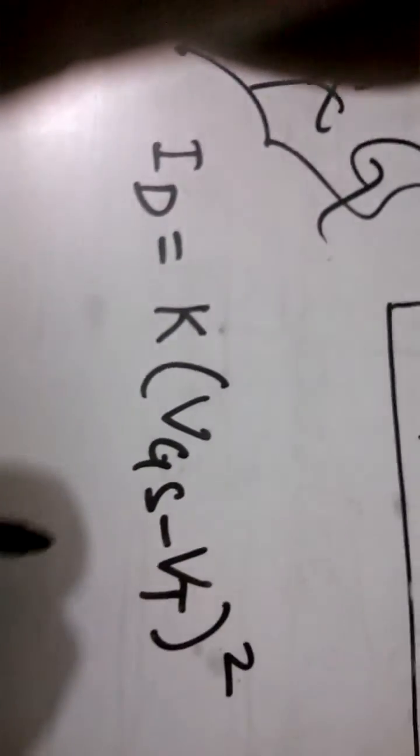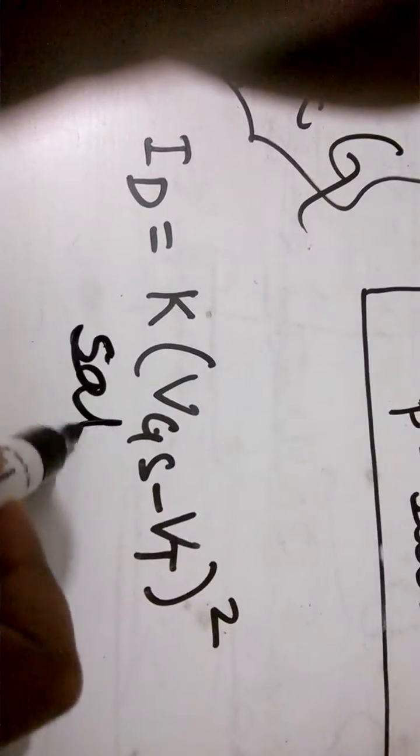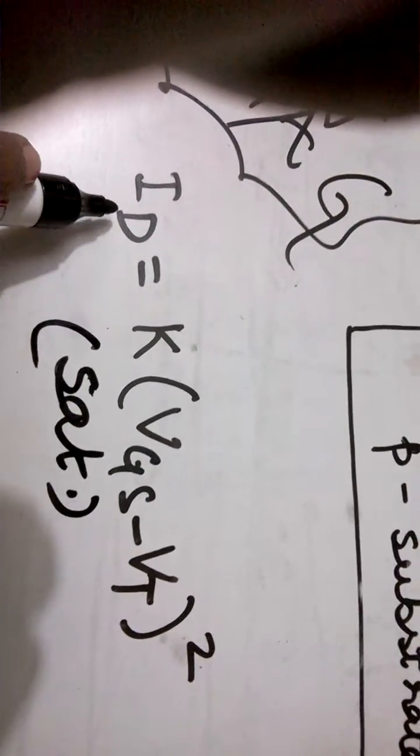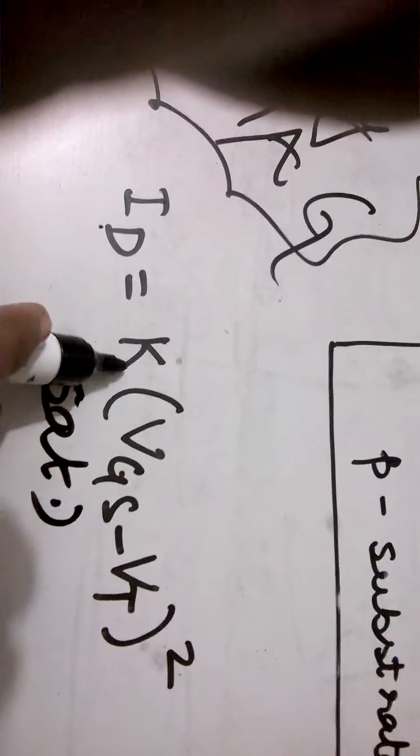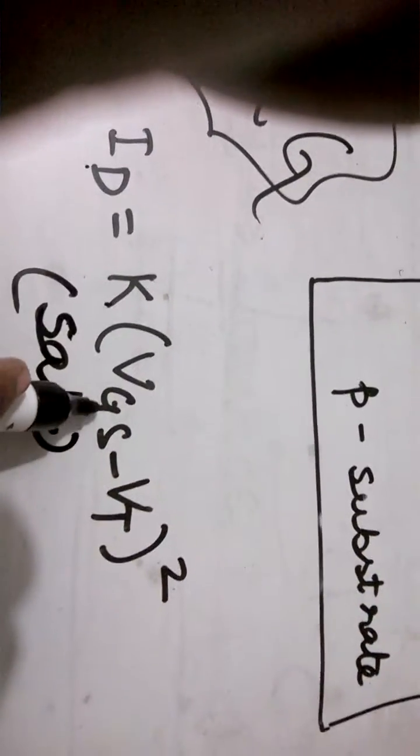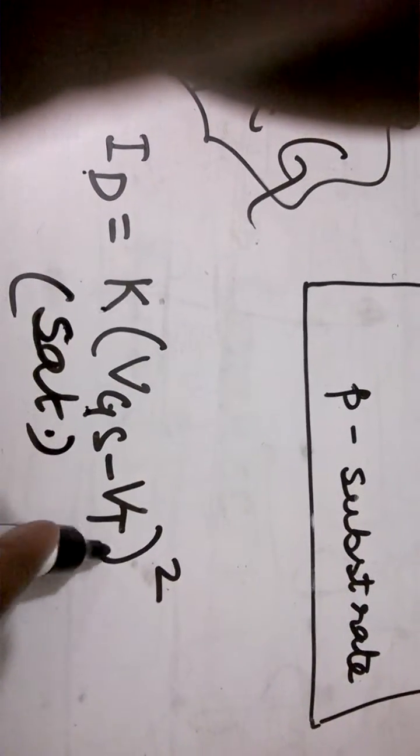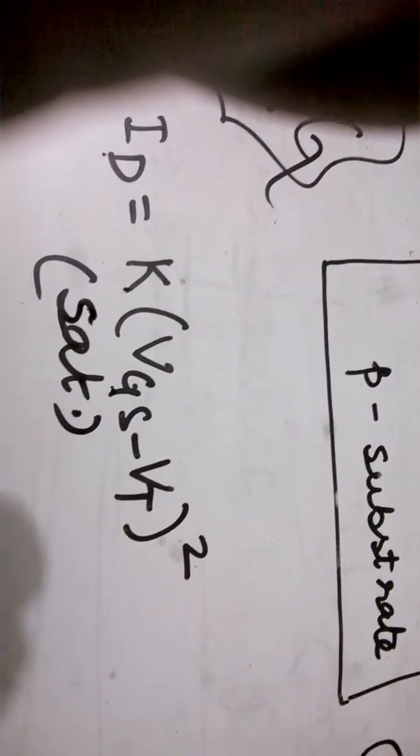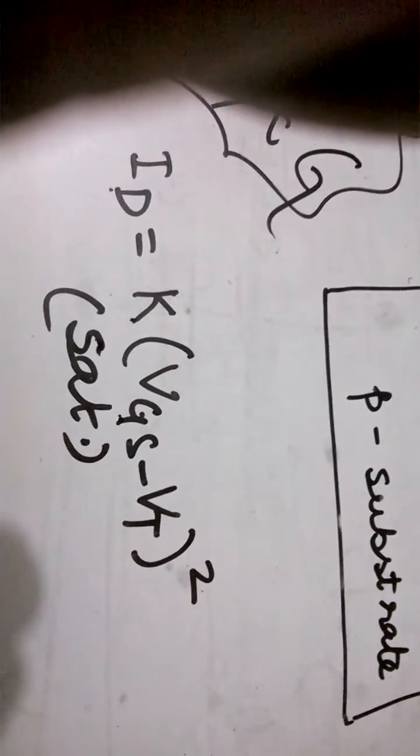Let's see the drain current equation. This is the drain current equation in the saturation region. This equation is valid only for the saturation region of MOSFET. ID the drain current is equal to K, a constant, into VGS minus VT whole square. In the next video we will do some numericals and gate questions based on these topics.